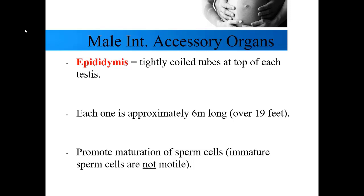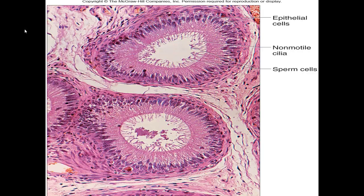The first internal accessory organ of the male reproductive system is the epididymis — very tightly coiled tubes found on each testis, about six meters (19 feet) long. It is in the epididymis where sperm cells go to mature, and that process is vitally important because immature sperm cells are not motile, meaning they cannot move on their own. Here is a cross section of the epididymis clearly showing sperm cells and their tails toward the lumen.